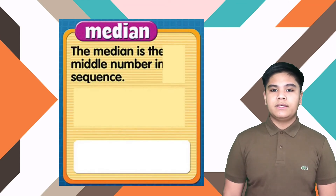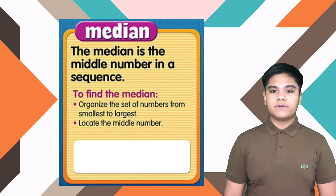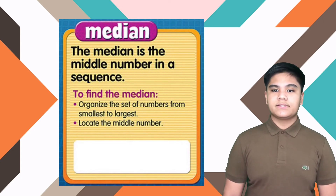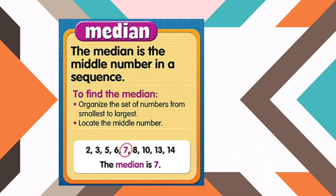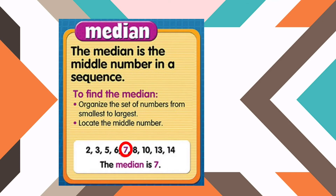The median is the middle number of a sequence. To find the median, you must first organize the set of numbers from smallest to largest. And second, you must locate the middle number. For example: 2, 3, 5, 6, 7, 8, 10, 13, 14. Therefore, the median is 7 because 7 is the middle number in this sequence.